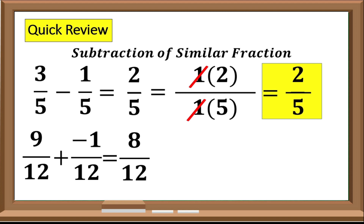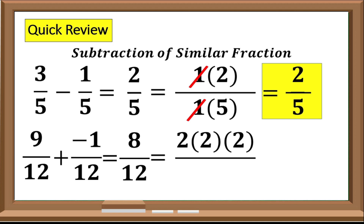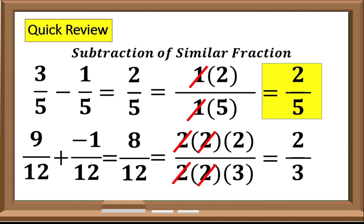Step 3: Factor out the sum in both numerator and denominator. In this case, our numerator is 8, so the factors are 2 times 2 times 2. And the factors of our denominator 12 are 2 times 2 times 3. Step 4: Divide the common factors that are present in both numerator and denominator. In this example, we have 2 and another 2. Step 5: Multiply the remaining factors. For the numerator, we have 2, and for the denominator, we have 3. So if you will subtract 9 over 12 minus 1 over 12, that would be equal to 2 thirds, or 2 over 3.